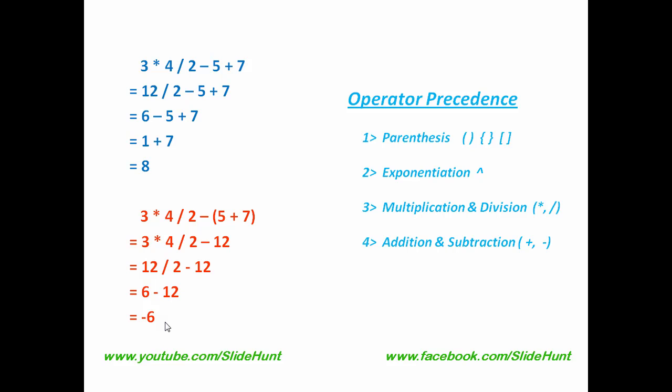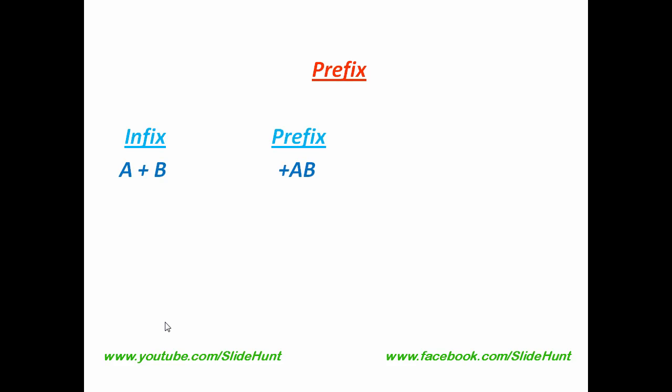Infix notation is the most common way of writing an expression, but it is not the only way. There are two other notations: prefix and postfix notation. Prefix notation was proposed by a Polish mathematician, and according to his name, prefix notation is also known as Polish notation. In Polish notation, the operator symbol is placed before the operands. For example, a plus b in infix can be written as plus ab in prefix. Similarly, 2 star 3 in infix can be written as star 2 3 in prefix.